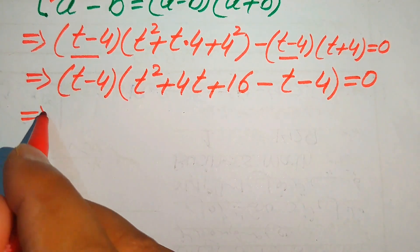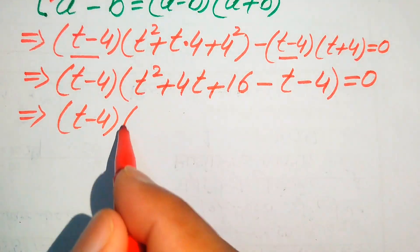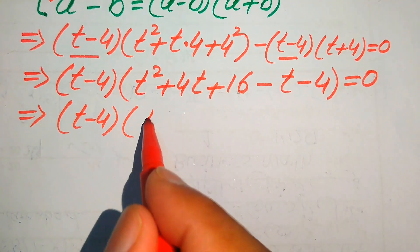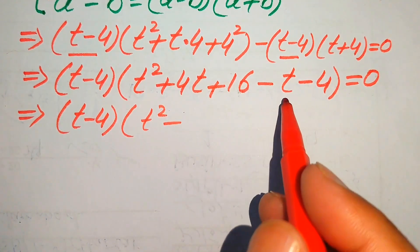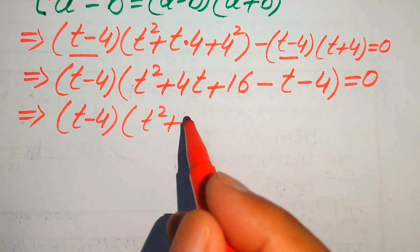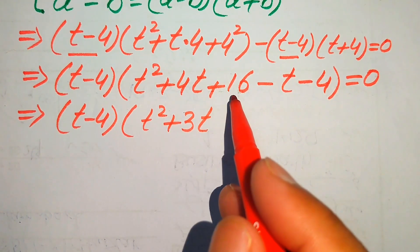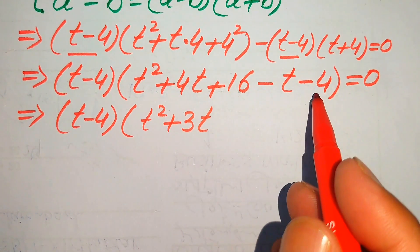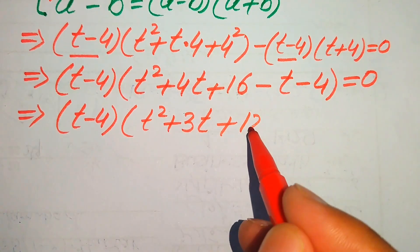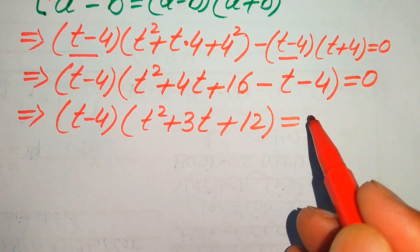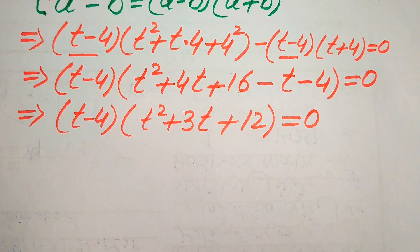In the next step we have (t minus 4) times (t squared plus 4t minus t plus 16 minus 4), where 4t minus t becomes 3t and 16 minus 4 becomes plus 12. So it is written as (t minus 4)(t squared plus 3t plus 12) equals 0.